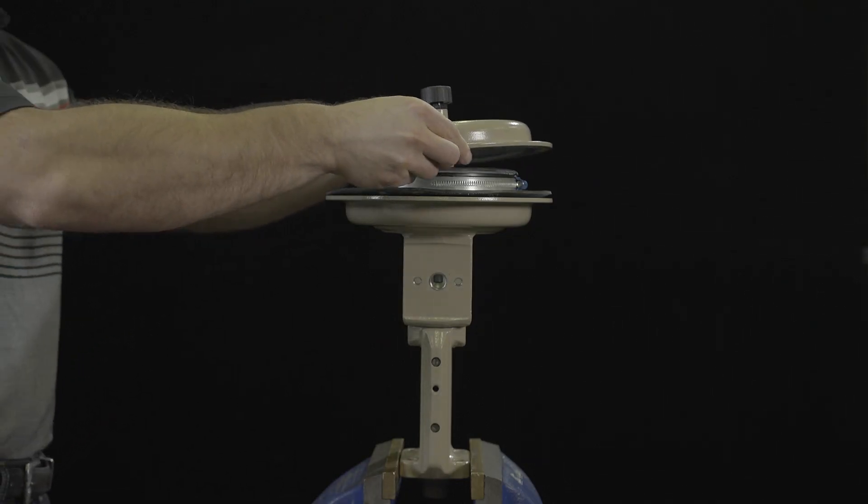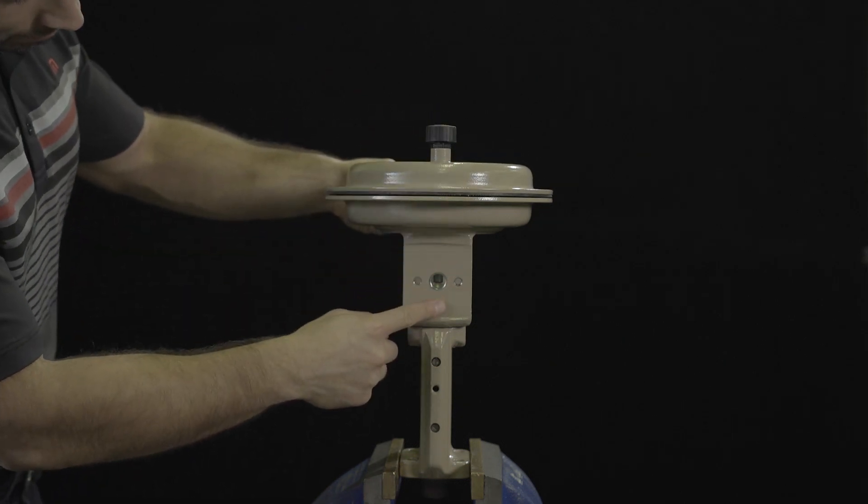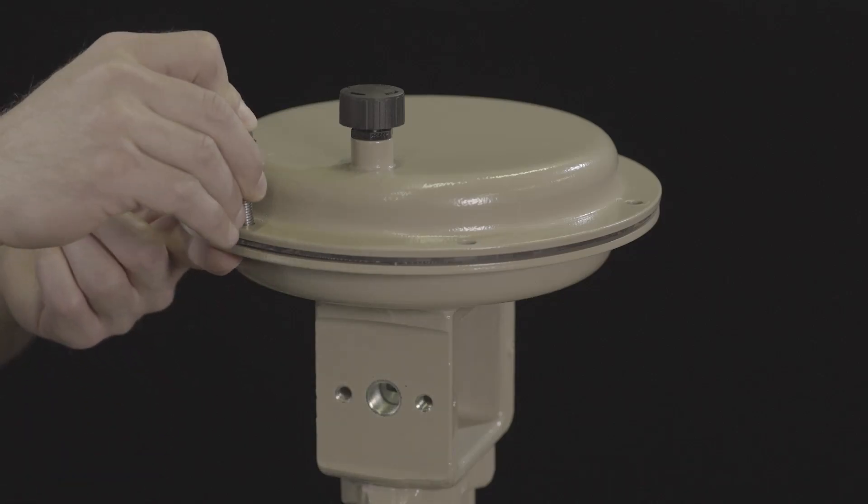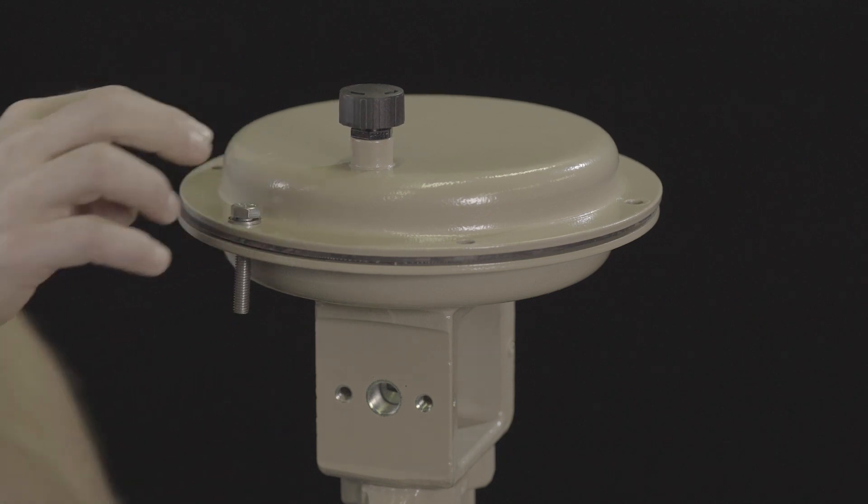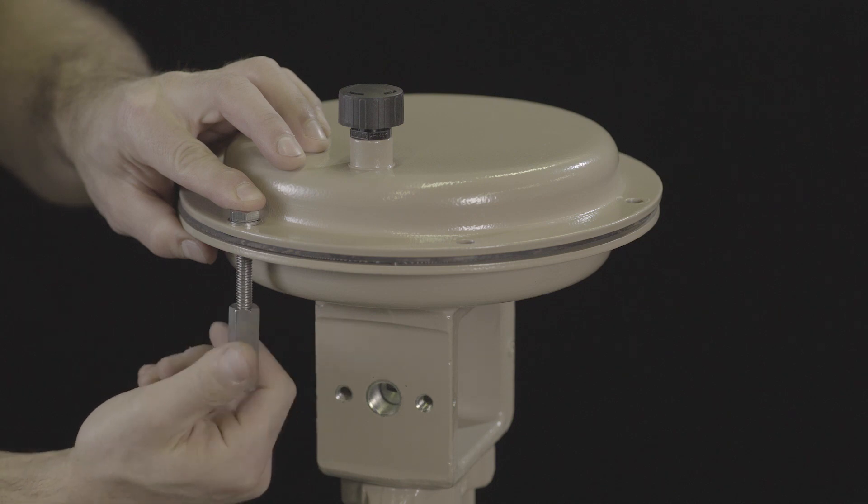Place the top of the actuator case onto the assembly. Ensure that the air connections on the cases are correctly aligned with each other. Fasten the top and bottom diaphragm cases together using the nuts and bolts. Observe tightening torques.